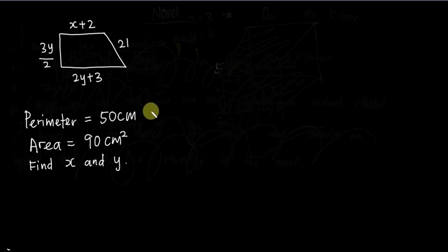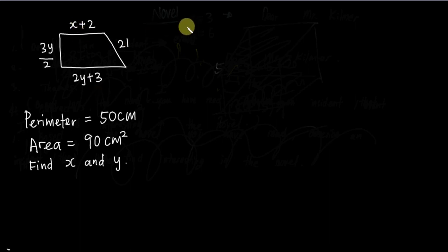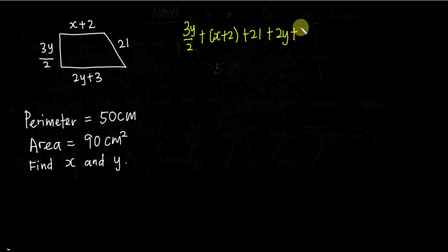The question will give you quite a lot of information. I've simplified it here — assume the question gives you a perimeter of 50 centimeters and the area is 90 centimeter square. For perimeter, you sum up all the side lengths. So I'll add them together: 3y over 2, plus (x + 2), plus 21, plus (2y + 3), equals 50. This is basically the meaning of perimeter — all the sides joined together.